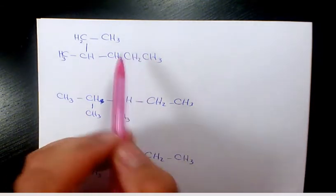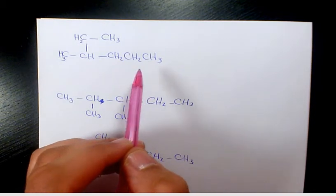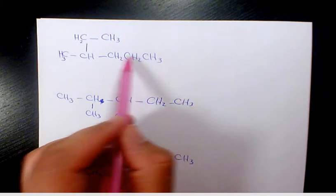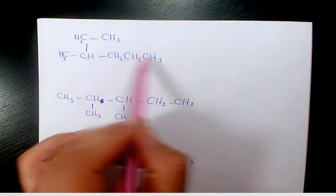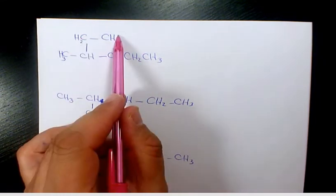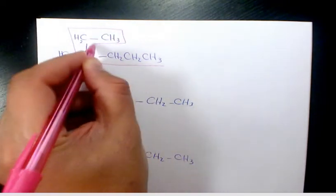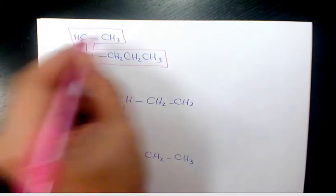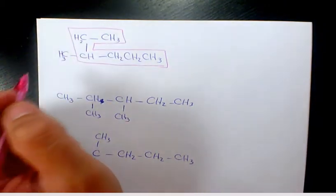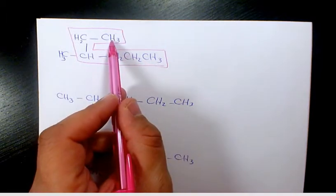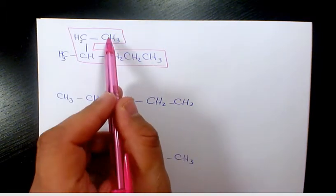So the first thing we need to do is find out the largest branch. So it's going to be one, two, three, four, five... one, two, three, four, five, six. So that's going to be the main one. One, two, three, four, five, six. So it means that we are dealing with hexane. We need to start numbering from here or here. Which one should we select? We need to select this one.